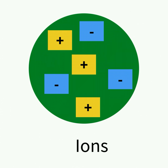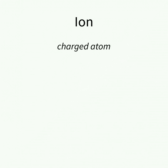In this lesson, we will overview ions. Ions are charged atoms. This means that they don't have charge neutrality, or zero charge. Charges, whether positive or negative, can carry electricity.